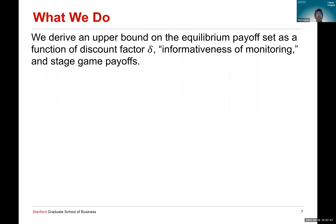What we do is derive an upper bound—we don't fully characterize the equilibrium payoff set given a stage game, discount factor, and monitoring structure; rather, we derive an upper bound on the equilibrium payoff set. That upper bound is a function of the discount factor, the informativeness of monitoring (to be defined formally), and the stage game payoffs. So if you give me these three objects—the discount factor, the distribution of signals conditional on actions, and the stage game payoffs—I can calculate this upper bound.